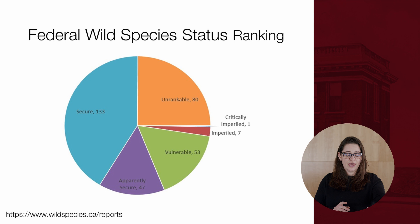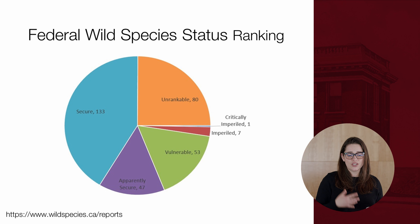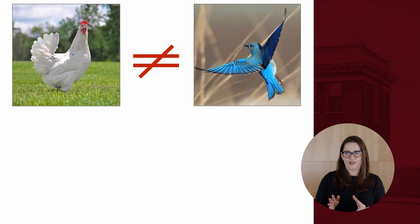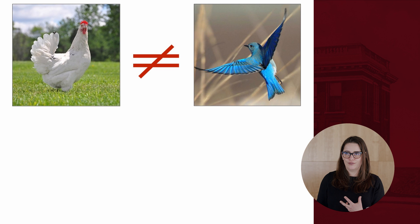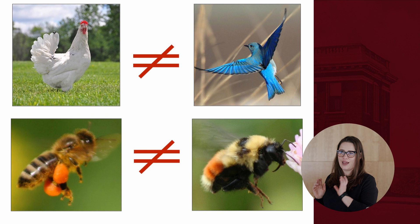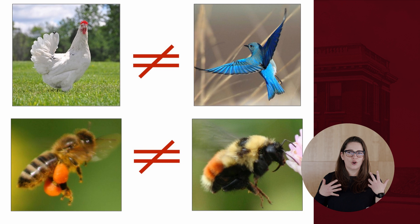This matters because about 50% of our bees are either data deficient or rare and declining. It also matters because everyone knows the difference between a chicken and a wild bird — chickens are livestock, wild birds are wildlife. The same distinction applies in the bee world: honeybees are livestock, and native wild bees are wildlife. If you take nothing else away from this talk, please take that away.